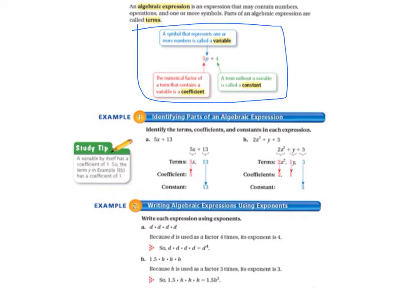Now let's look at example 1, identifying parts of an algebraic expression. We'll start by looking at the study tip. A variable by itself has a coefficient of 1. So the term y in example 1b has a coefficient of 1. So let's start by looking at 1a, 5x plus 13. So the terms are 5x and 13. So those are the parts of the expression. So the coefficient, the number next to the variable is the coefficient, and that is 5. And the constant is 13. So that's a number that doesn't change. That's what constant means.